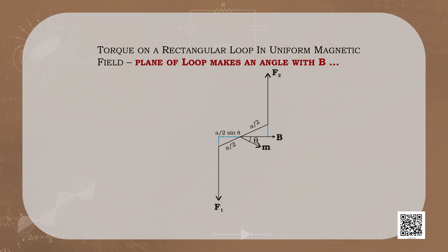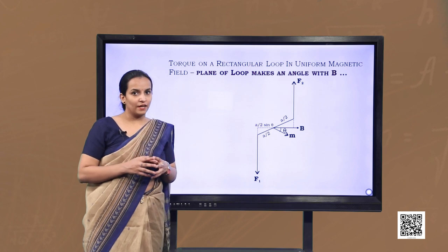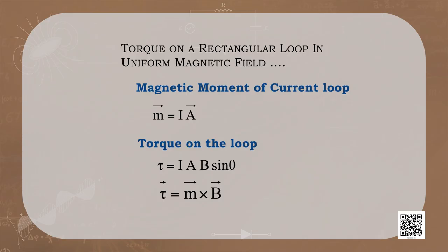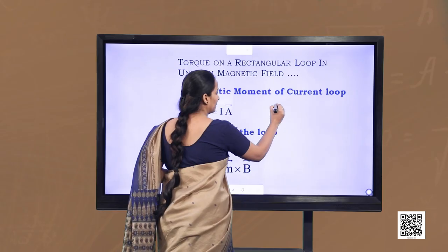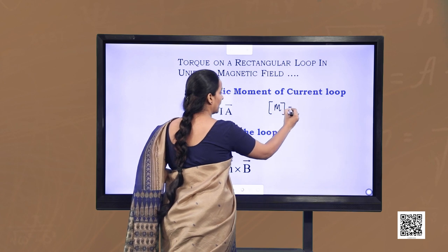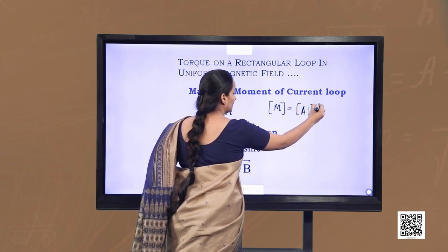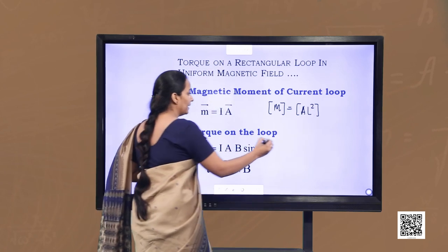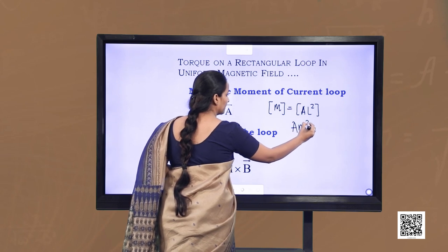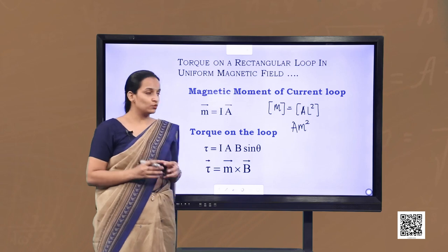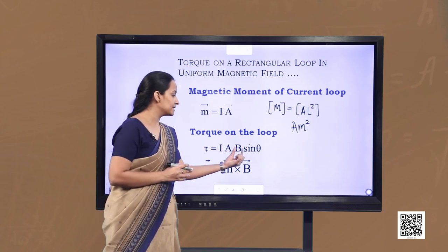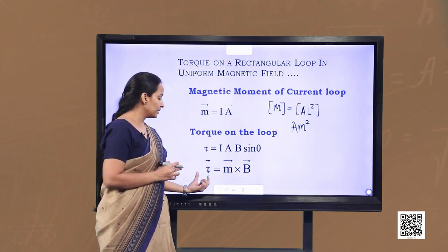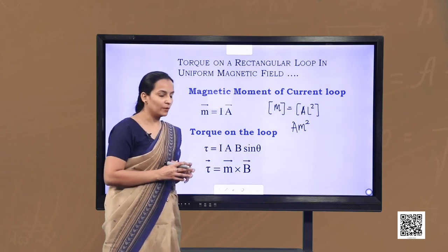Looking at the diagram, we see M pointing normal to the plane of the loop — this M is the magnetic moment. We define magnetic moment as M = I·A. The dimension of magnetic moment is A·L², and the SI unit is ampere·meter². The torque can then be expressed as the cross product of magnetic moment and magnetic field: τ = M × B.